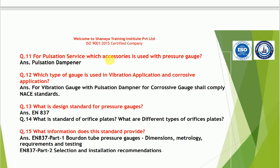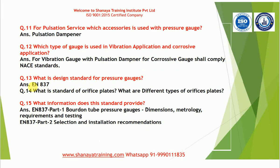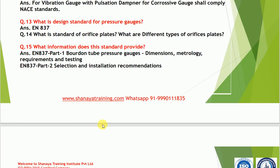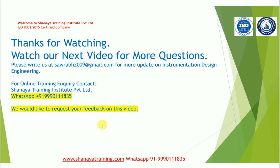For pulsation services, a pulsation dampener is used with the pressure gauge. For vibration applications, use a vibration gauge with pulsation dampener. For corrosive applications, a diaphragm seal shall be applied. The design standard for pressure gauge is EN837. EN837 Part 1 covers Bourdon tube pressure gauge dimensions, metrology requirements, and testing. EN837 Part 2 covers selection and installation recommendations.